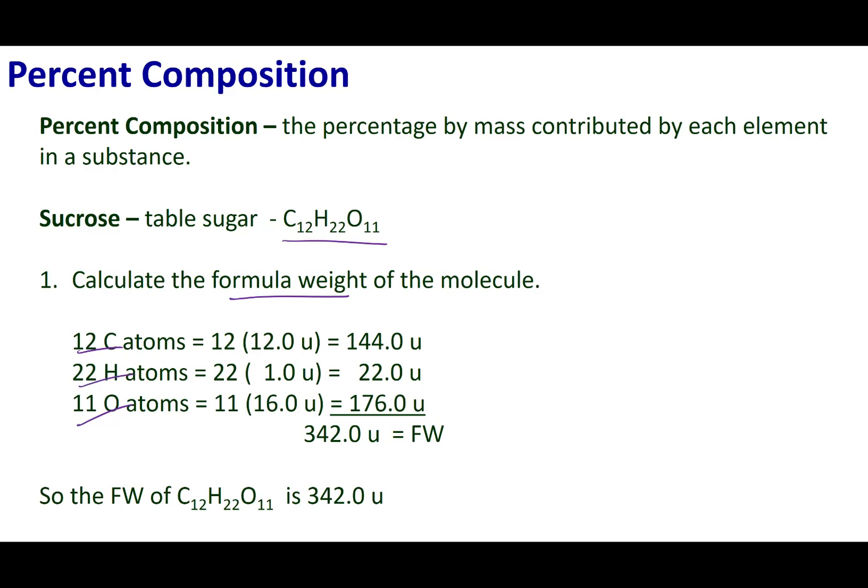I look on the periodic table, carbon weighs 12 amu, hydrogen about 1, and then oxygen about 16. So I'm going to times the amount that I have to the atomic weight that I find on the periodic table. I get those numbers and then I can sum it to get the formula weight of table sugar.